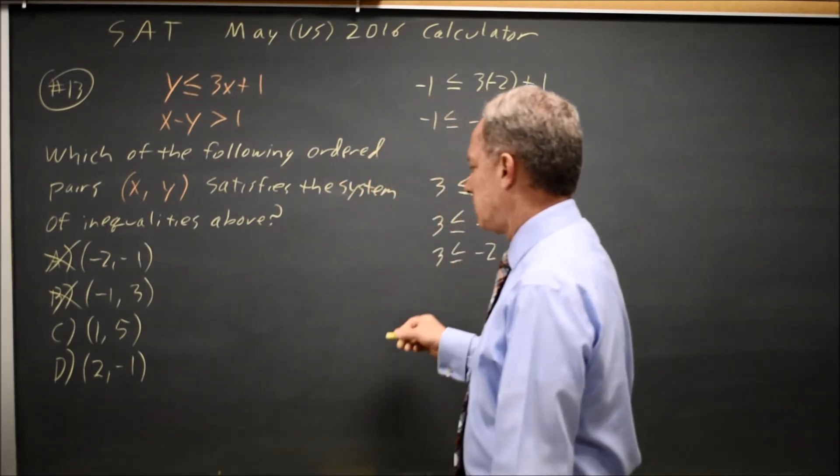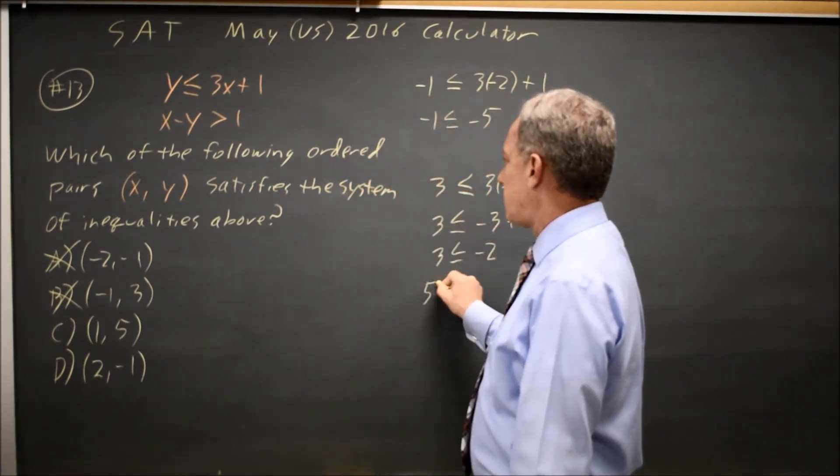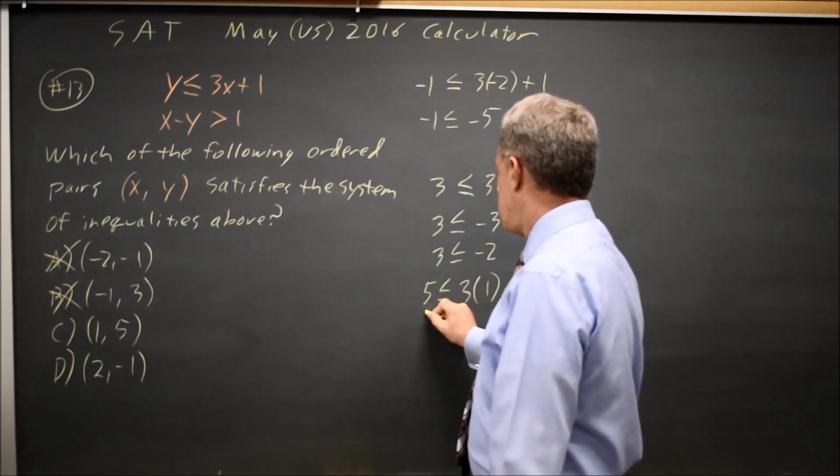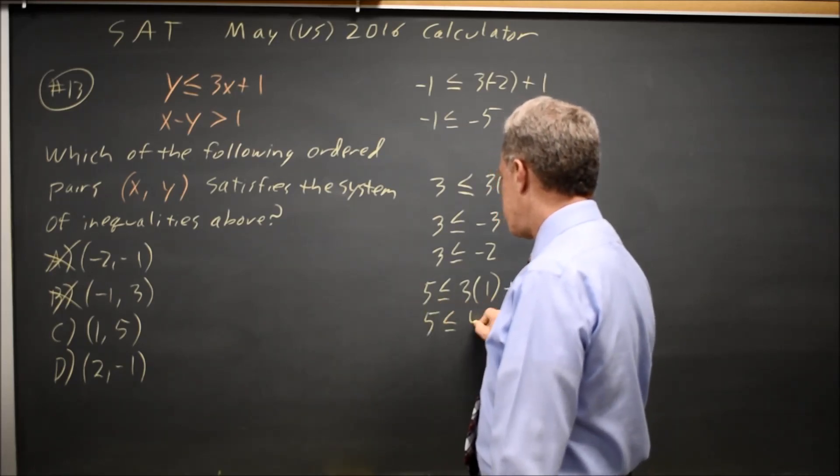How about choice C? Is the Y value 5 less than or equal to 3 times the X value 1 plus 1? Is 5 less than or equal to 3 plus 1, which is 4? No.